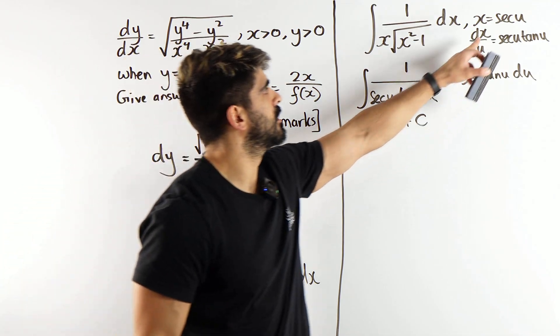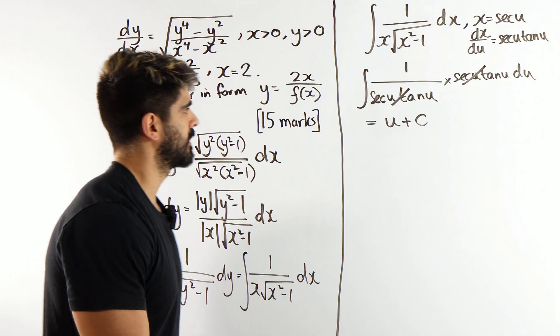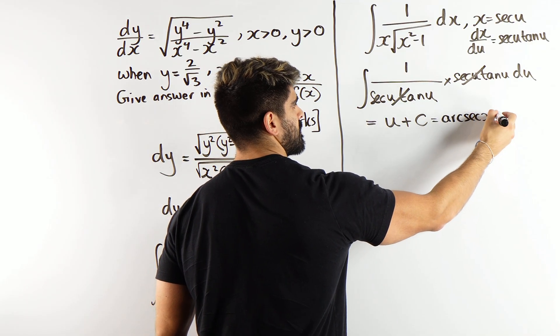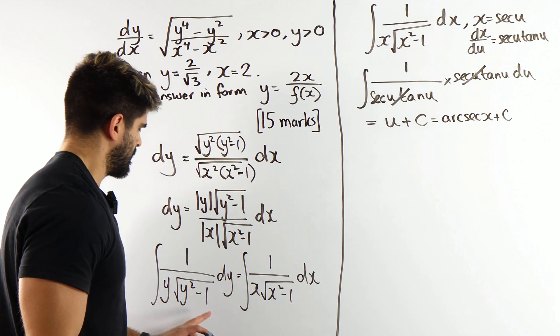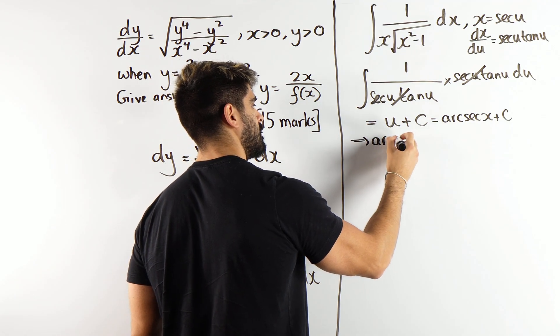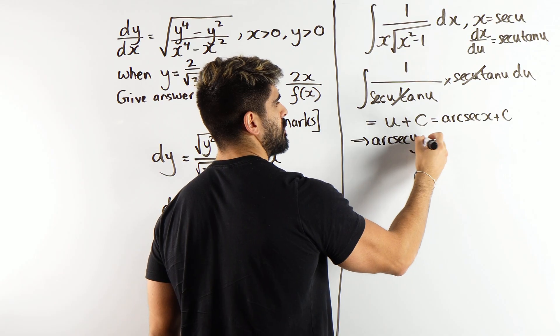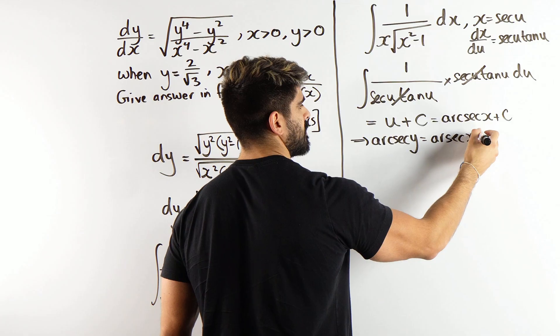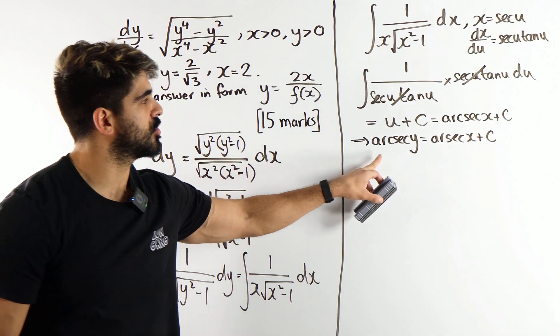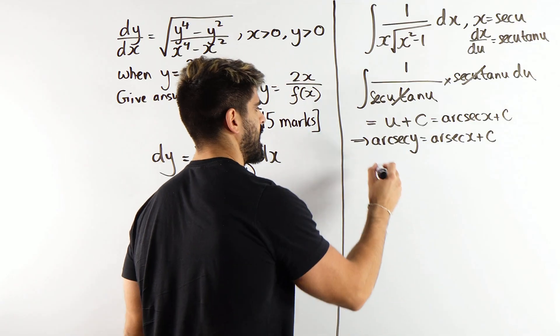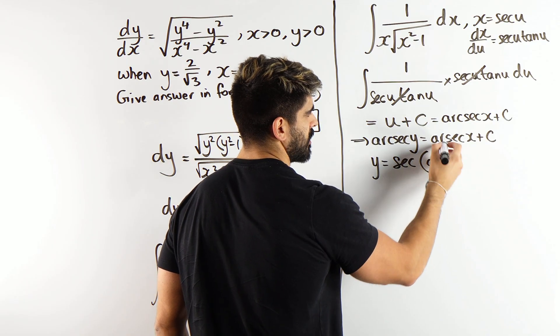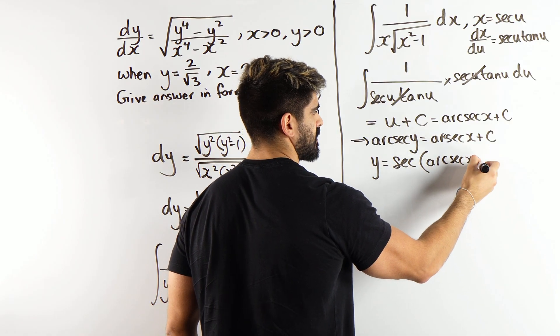Now, I'm not going to write down the whole thing, but we just write it down. Sec squared minus 1 is tan squared. Then when we root it, we just get tan. Times dx is now sec u tan u. And this is beautiful, mate. These just cancel. And we're just left with the integral of 1 du, which is u plus c. Now, what's u? u is arc sec x. So, this is arc sec x plus c.